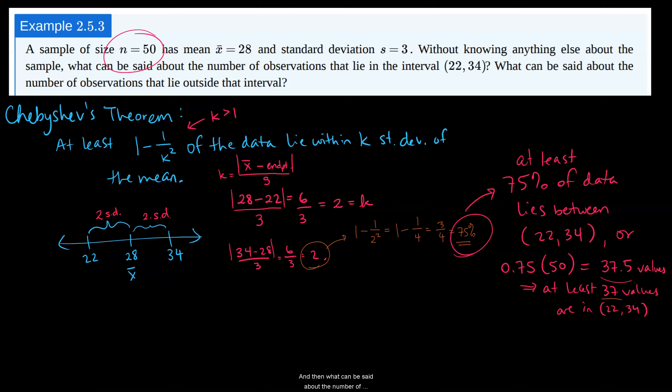And then what can be said about the number of observations lying outside the interval? Well, if I have 50 total, 50 minus 37 is going to give me 13. So we can say at most 13 lie outside.